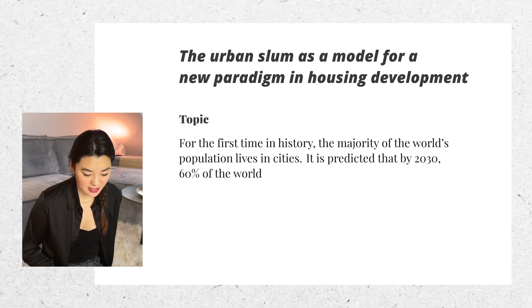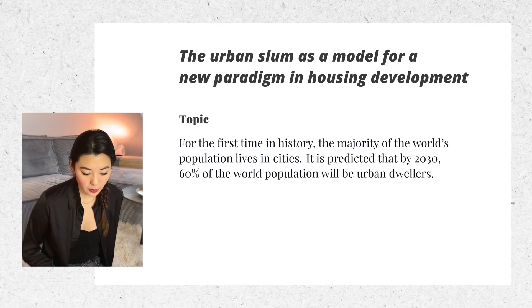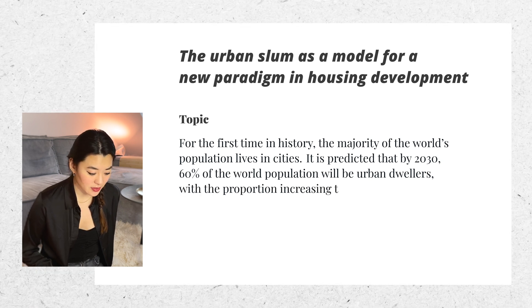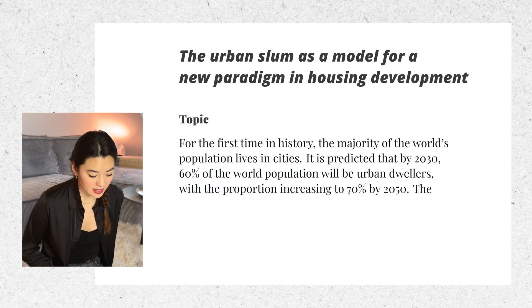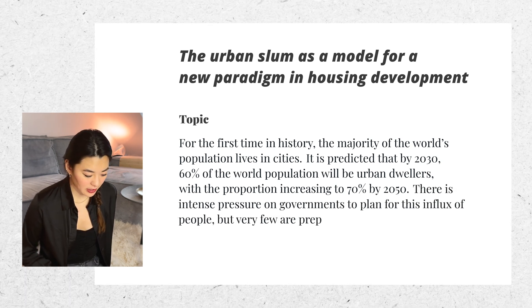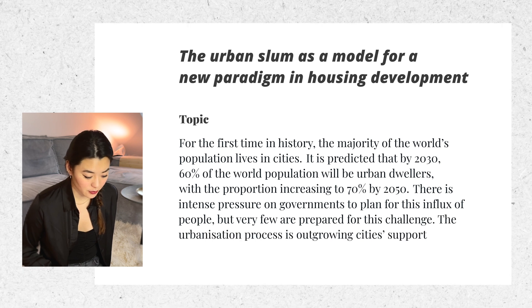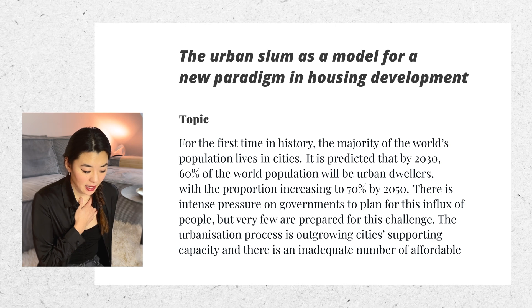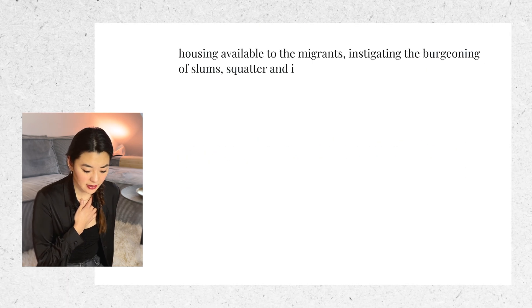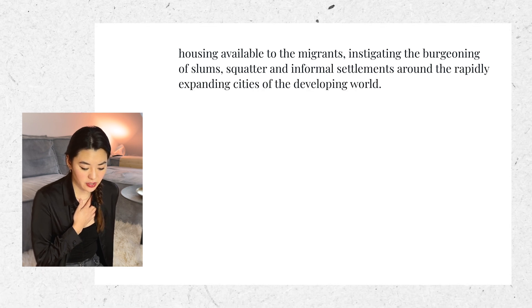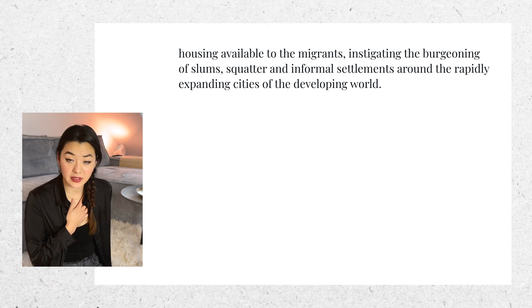For the first time in history, the majority of the world's population lives in cities. It's predicted that by 2030, 60% of the world population will be urban dwellers, with the proportion increasing to 70% by 2050. There is intense pressure on governments to plan for this influx of people, but very few are prepared for this challenge. The urbanization process is outgrowing cities' supporting capacity, and there's an inadequate number of affordable housing available to migrants, instigating the burgeoning of slums, squatter, and informal settlements around the rapidly expanding cities of the developing world.